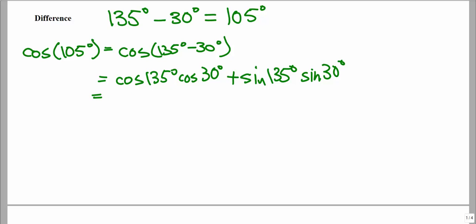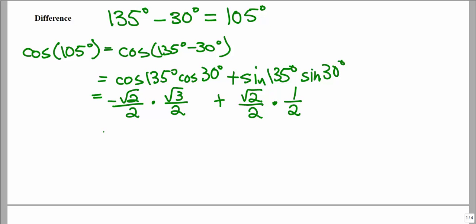Cosine of 135, which is in quadrant 2 — that's our 45-degree angle family — so that's −√2/2, times cosine of 30, which is √3/2, plus sine of 135 (sine is positive in quadrant 2), so that's √2/2, times sine of 30 degrees, which is 1/2. We multiply across the two fractions — very similar to what we just did for the sum — multiply across the two fractions, and then combine into the same denominator.